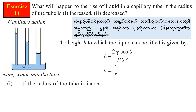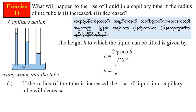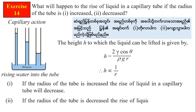If the radius of the tube is increased, the rise of liquid in the capillary tube will decrease. Radius increases, so H will decrease. If the radius of the tube is decreased, the rise of liquid in the capillary tube will increase.